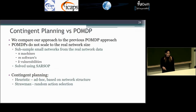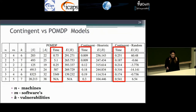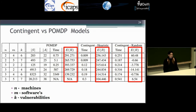We also wanted to compare our method to a POMDP method. However, POMDP is not scalable to our network size. So we subsampled our networks, created smaller problems, and compared with a heuristic contingent planner — we added a heuristic based on the structure of the network — and another contingent planner with random action selection. In terms of time, the POMDP managed to solve the small networks, but time grows exponentially with problem size. In terms of expected utility of the plan, POMDP is the most accurate model, but the contingent planner using our heuristics is quite close to the POMDP results and much better than the random results.